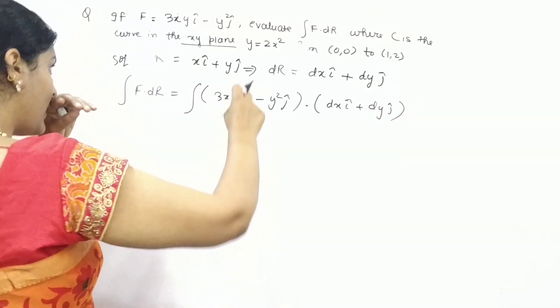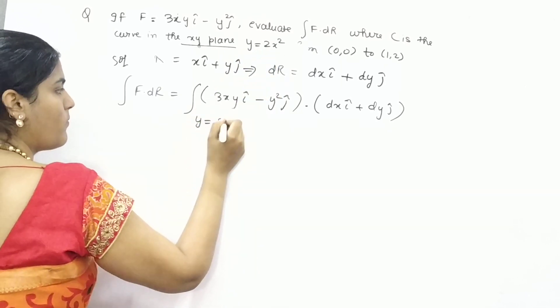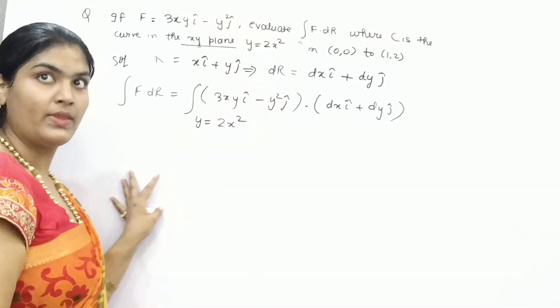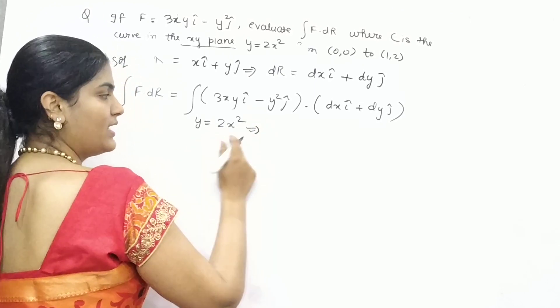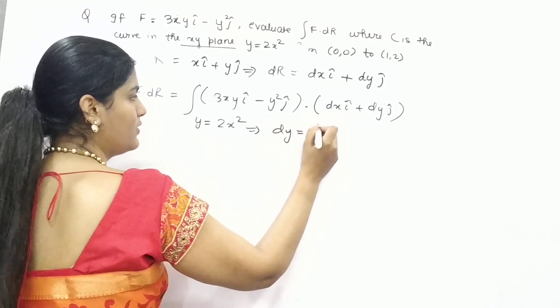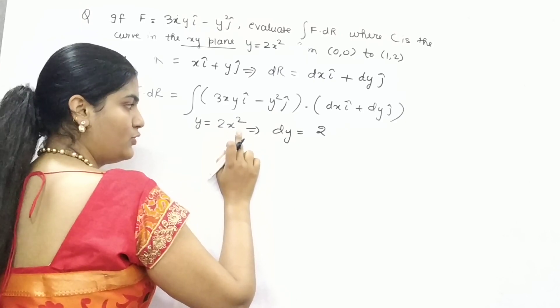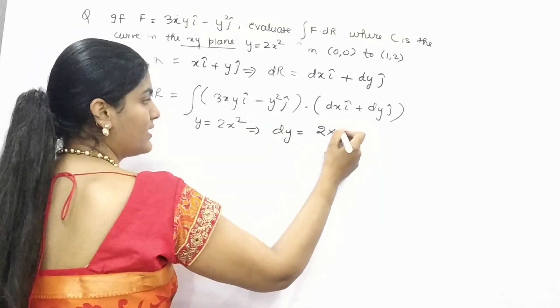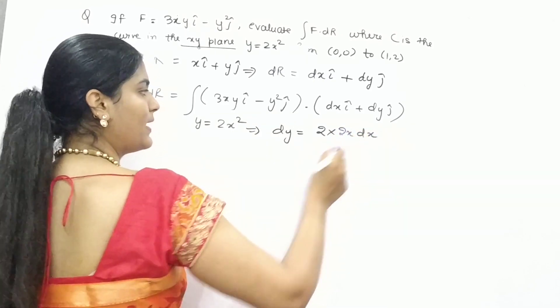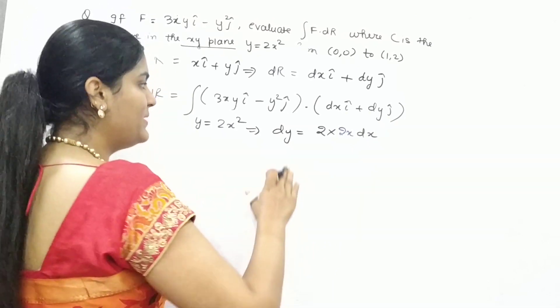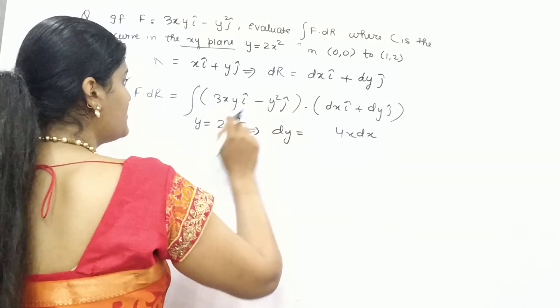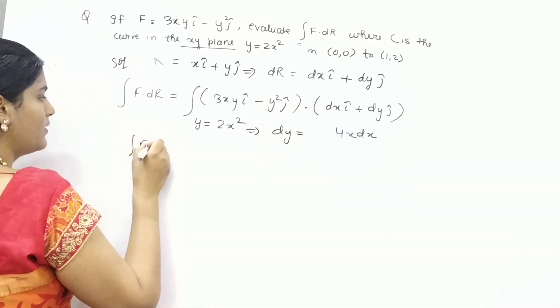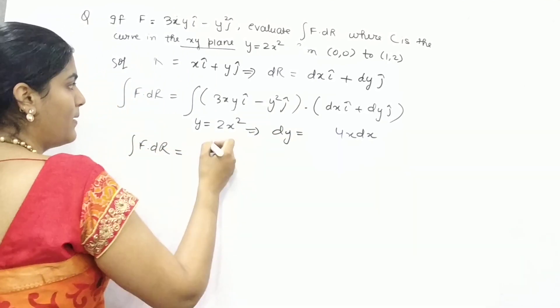Now you can see that y is 2x square. It is given to you. If you find out the value, if you differentiate it, what you will get? dy is 2. Differentiation of 2x square is 2x if you are differentiating with respect to x. That means dy is equal to 4xdx. Now substitute these values into this main form.